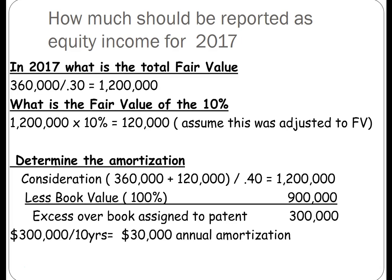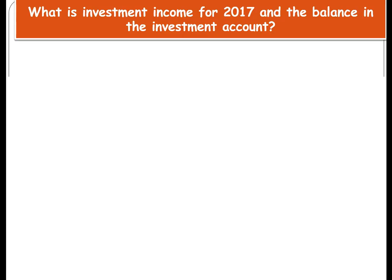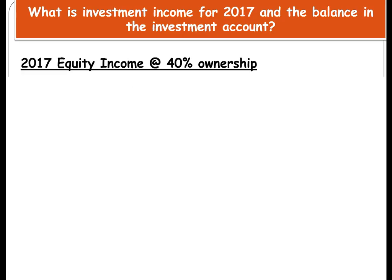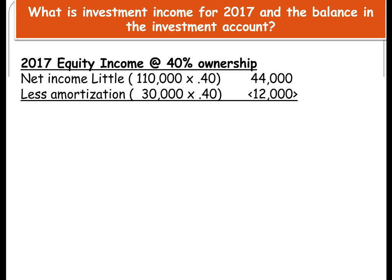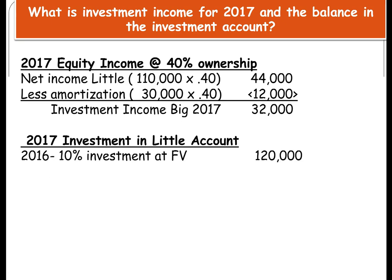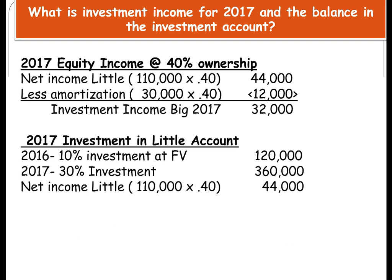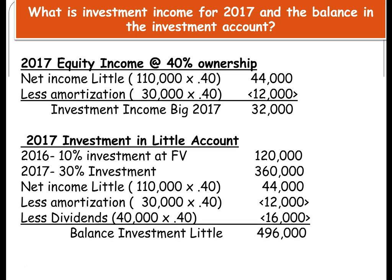Divided by 10 years means at 100% we're going to amortize $30,000 a year. What is the investment income at 40%? Net income would be $44,000, which is 40% of $110,000. We would take 40% of the amortization, so investment income from our equity investment in the subsidiary would be $32,000. Remember, dividends under the equity method are not reported as income by the parent — instead, they are a reduction in the investment account. The balance in our investment in Little would be our 10% at fair market value, plus our 2017 investment, plus net income at 40%, less the amortization, less the dividend — ending balance of $496,000.